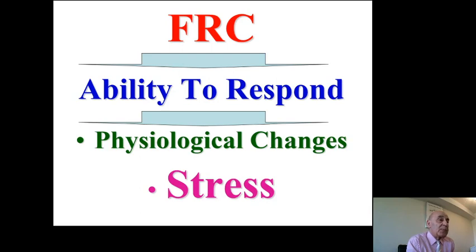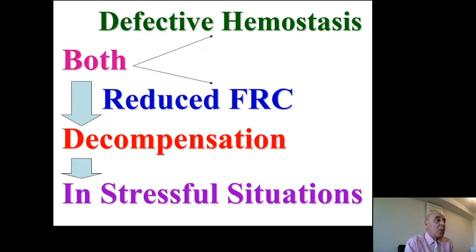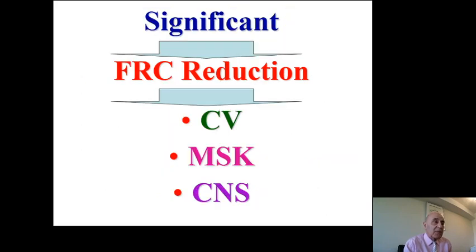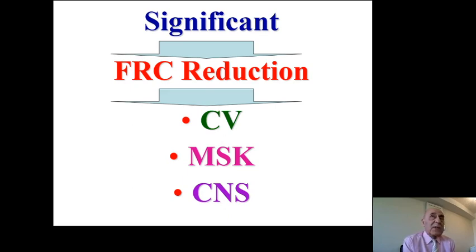When we have defective homeostasis and a reduction in FRC, that will lead to decompensation in stressful situations. The elderly generally need approximately 95% of their remaining FRC to respond to physiological changes and stressful conditions. A significant reduction in FRC could affect the cardiovascular system, the musculoskeletal system, and the central nervous system.